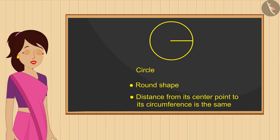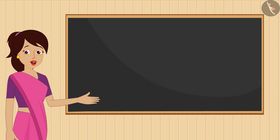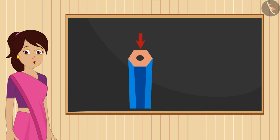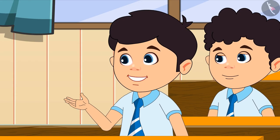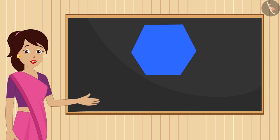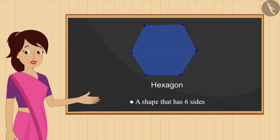Now tell me what is the shape of the upper surface of this pencil? If we paint this upper surface and trace it on a paper, then which shape shall we get? Teacher, we will get the shape of a hexagon. Absolutely right. Hexagon has six sides that are joined this way.